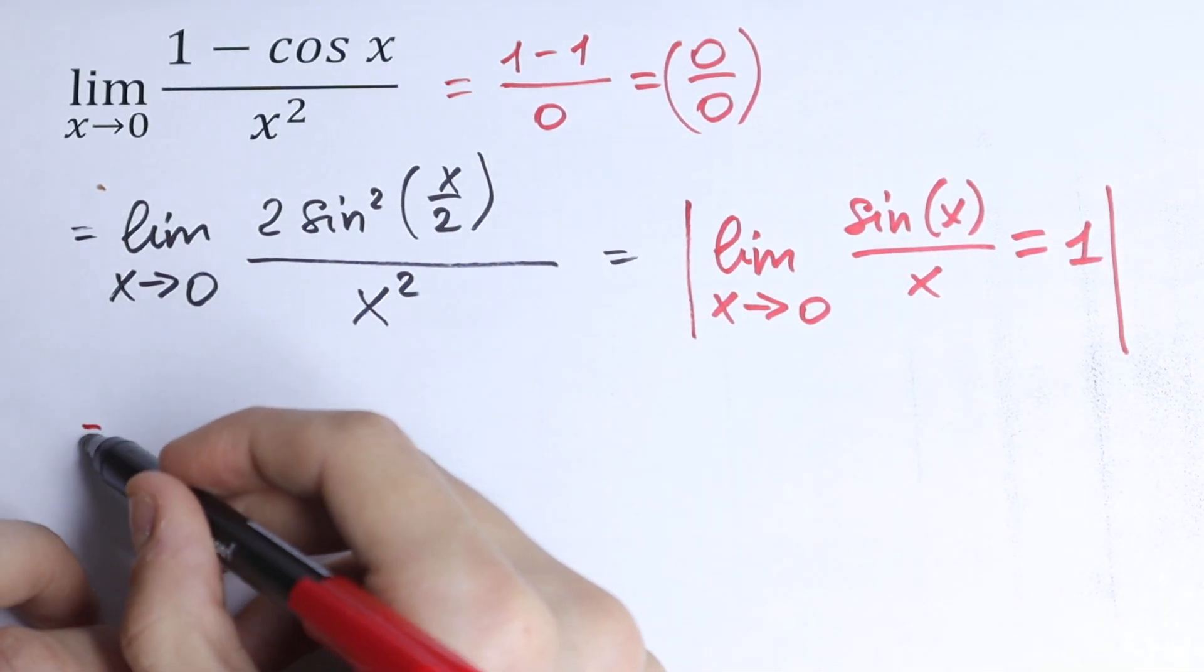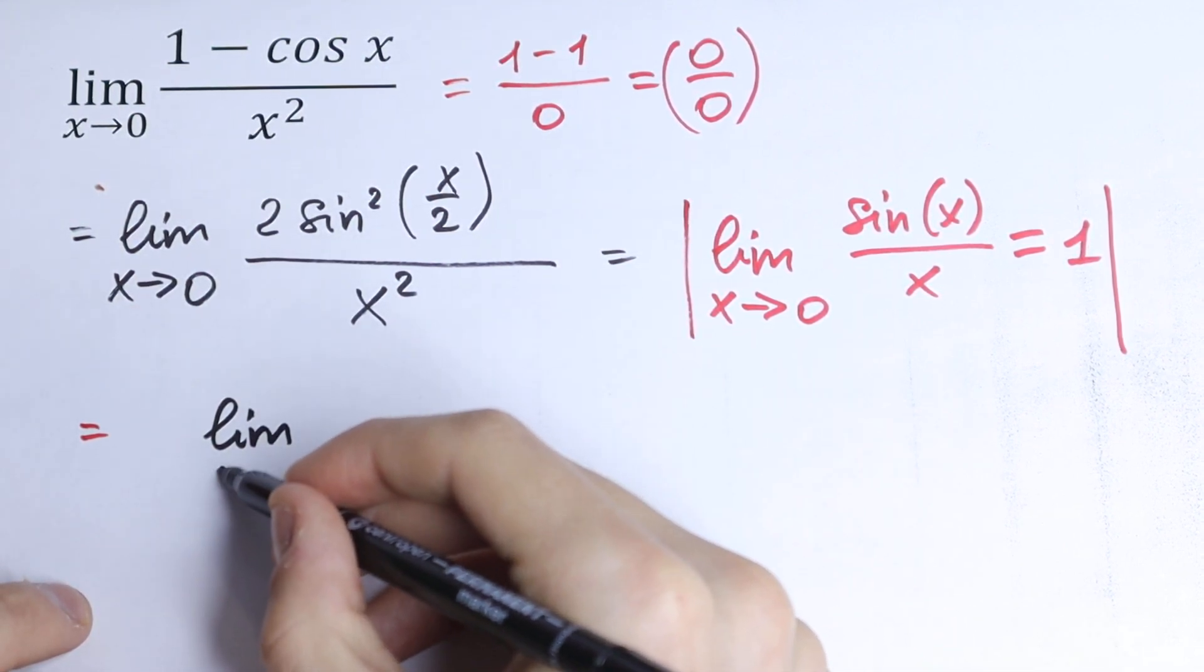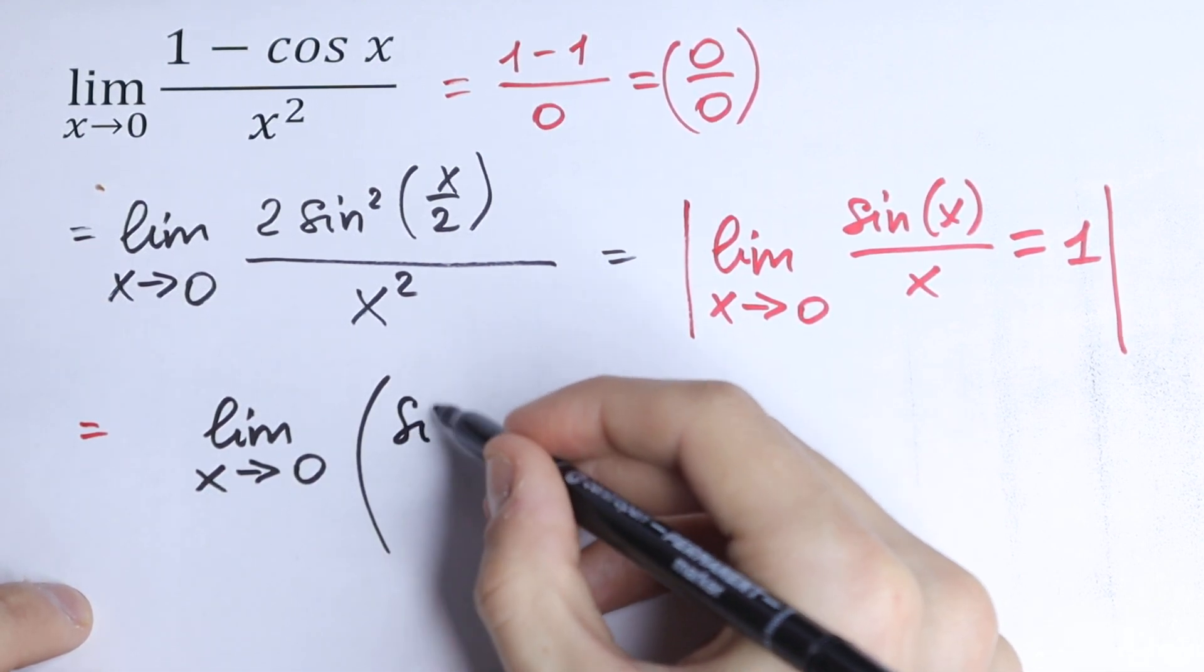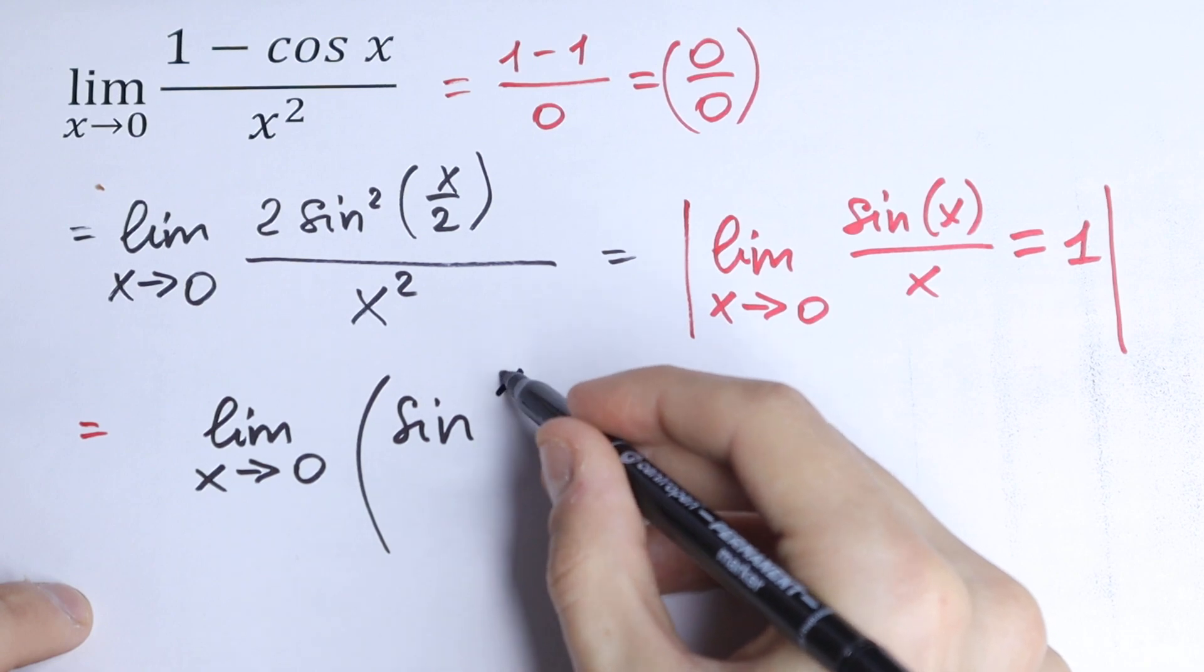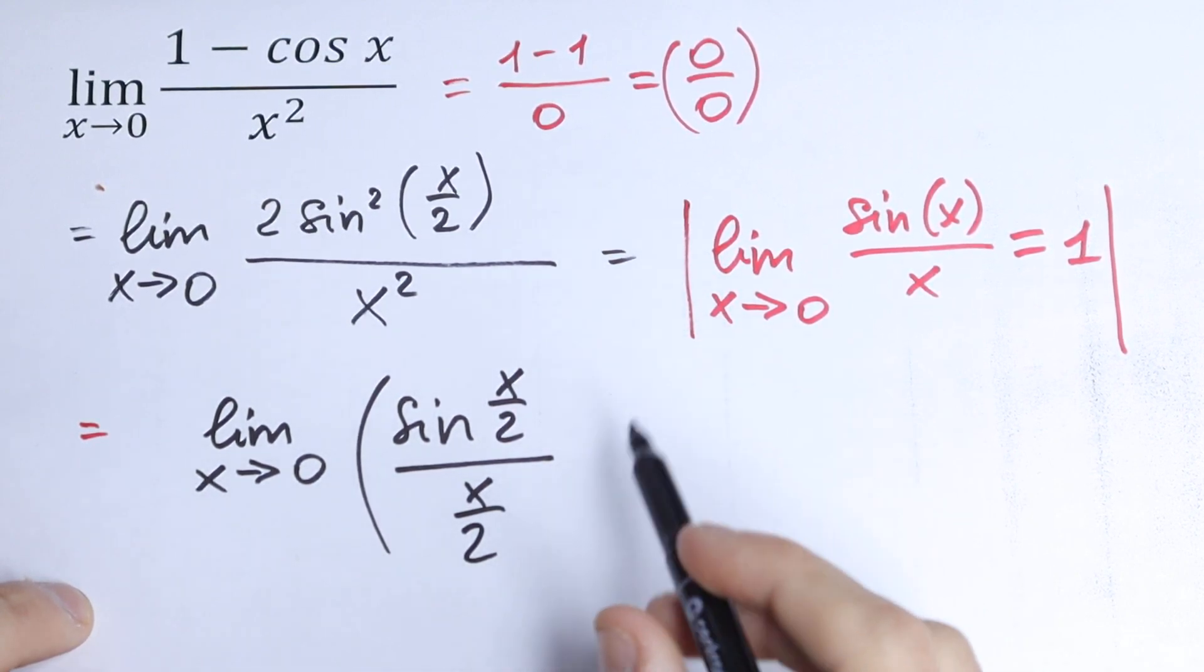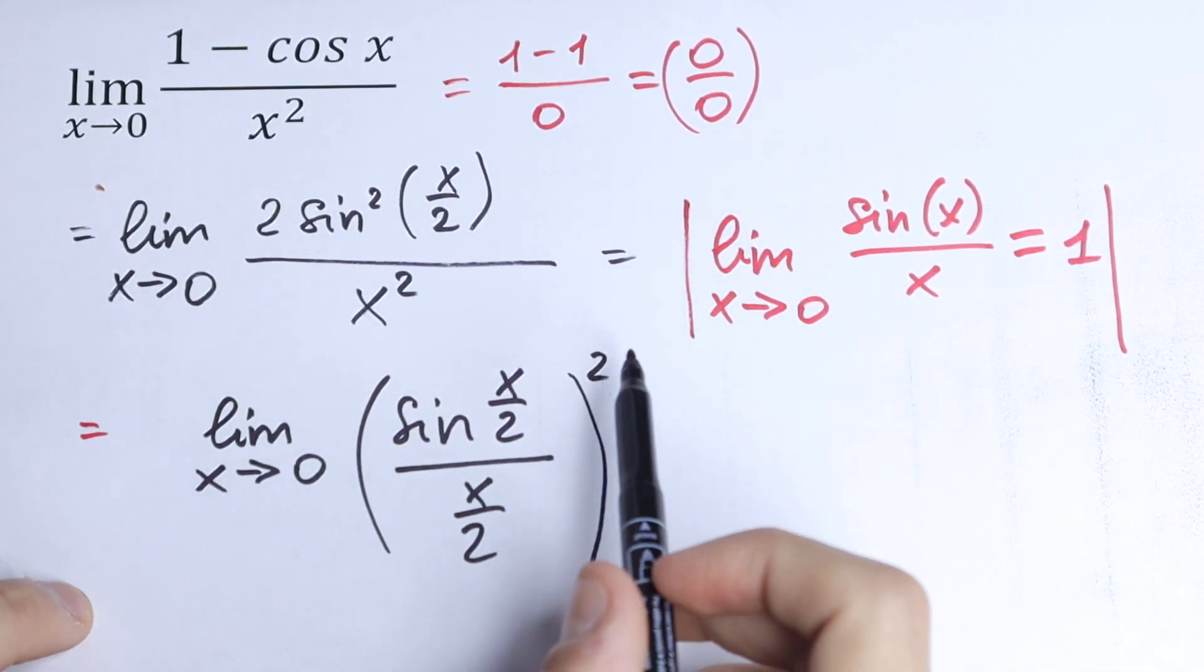I want to suggest a trick right here. We can write this limit as lim(x→0) of sin(x/2) divided by x/2. But we need to raise this to the second power. Take a look.